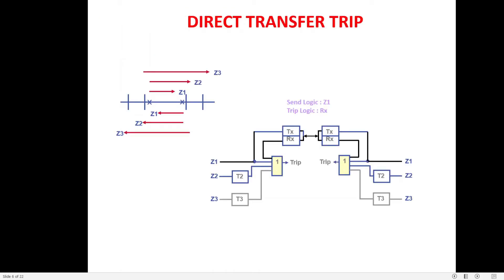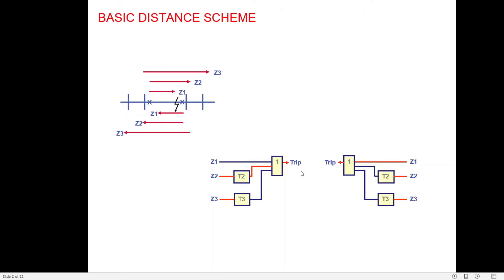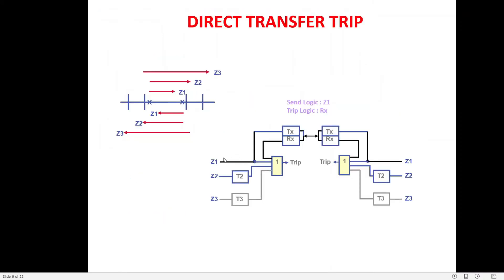The first channel-dependent scheme is Direct Transfer Tripping (DTT). In this scheme, tripping is transferred directly from one end to the other. The end that sees the fault in Zone 1 transfers the tripping signal to the remote end. In the basic scheme, left-hand and right-hand side logics operate separately with no channel connection, but in the DTT scheme they are connected via two PLCC channels.